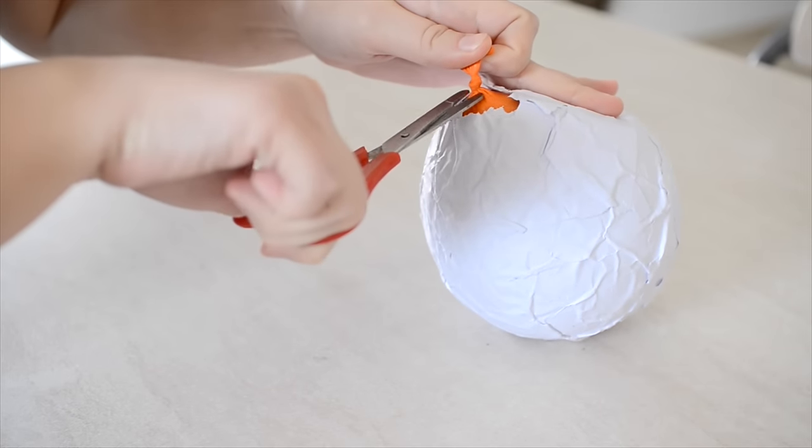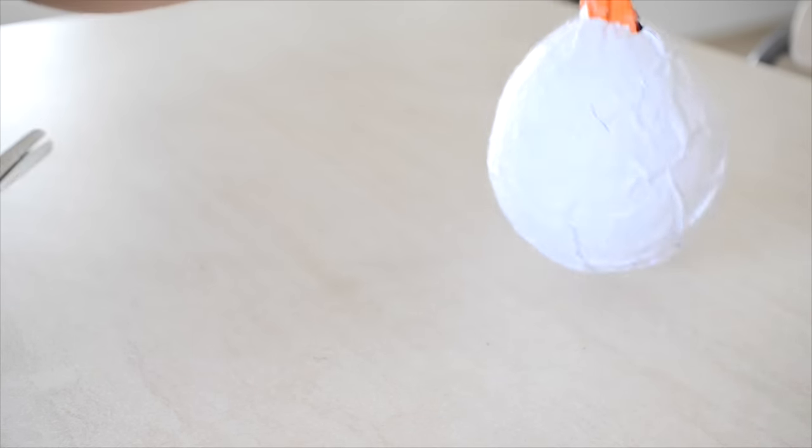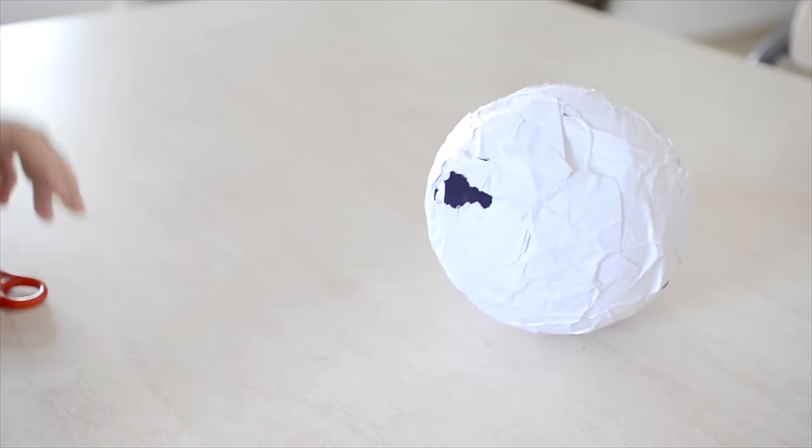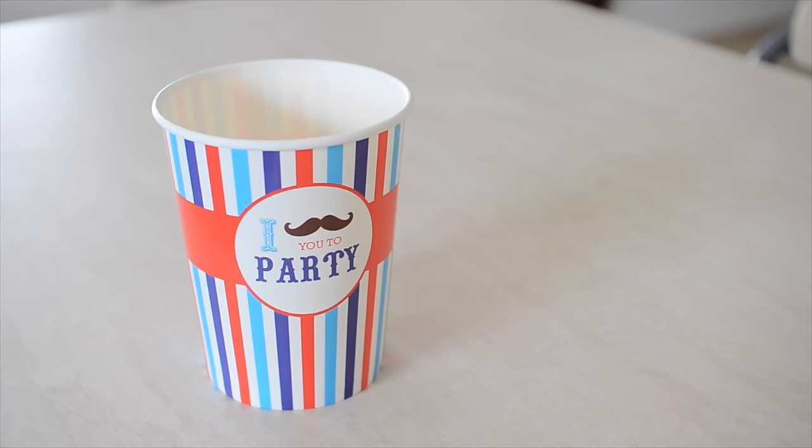When the paper has dried fully, you can remove the balloon by cutting a small hole in the top of it to release the air. Gently pull the balloon out, making sure none of it is left inside the paper ball.